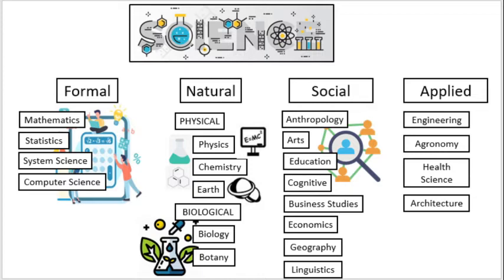And lastly, the applied science. Applied science is a branch of science that applies existing scientific knowledge to the development of more practical applications like engineering. This is the application of formal and natural science. Agronomy, under which is agriculture. Health science, under which is medicine, nursing, and agriculture. These are the four major branches of science.